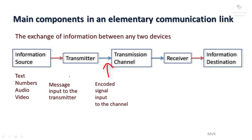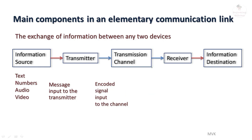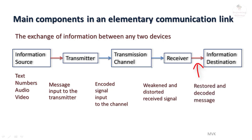The encoded signal is input to the channel. The channel can be wire, radio wave, microwave, atmospheric infrared, or optical fiber. Due to the physical properties of the channel or external disturbances, the transmitted signal gets disturbed. At the receiver side, the weakened or distorted signal is received and converted back into its original form by restoring and decoding the message. Finally, at the destination, the original information — text, numbers, audio, or video — is received properly.